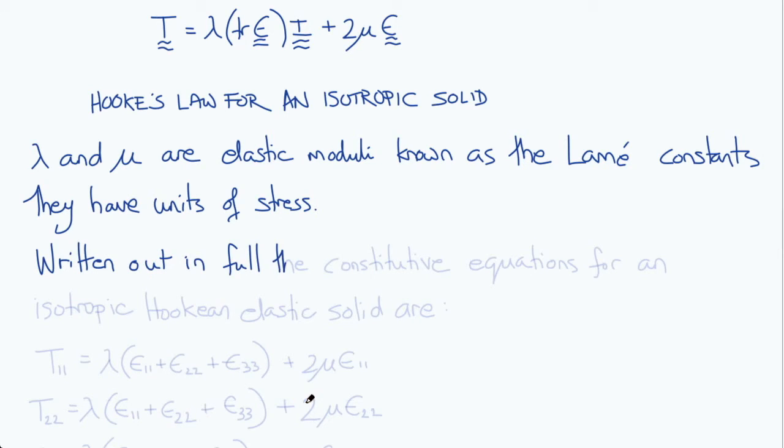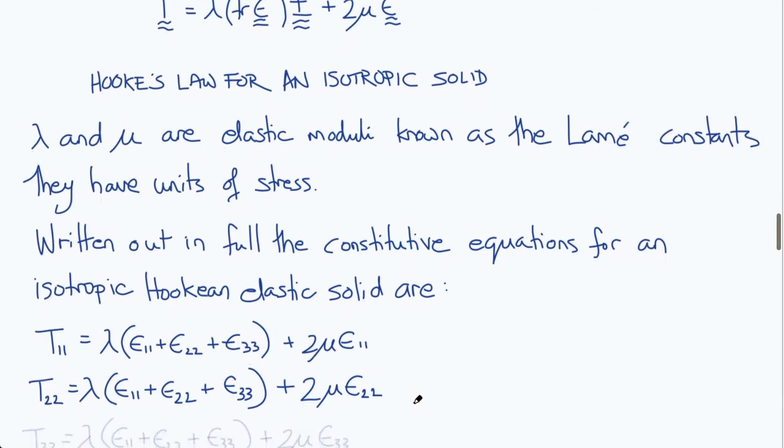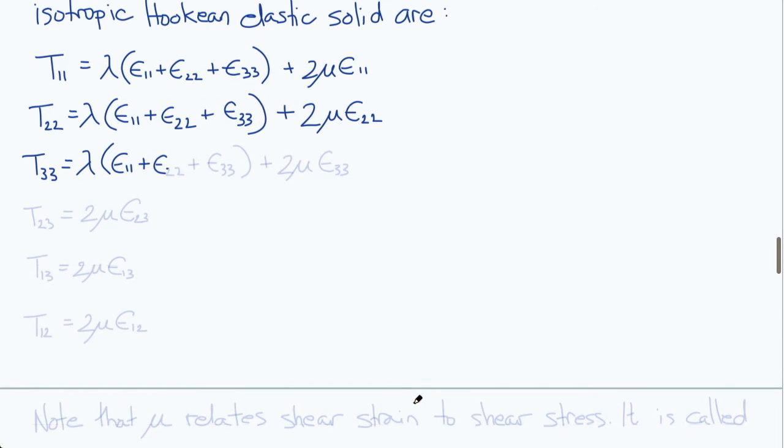Writing the constitutive law out now in full, for the isotropic Hookean elastic solid, we get the following. T11 is equal to lambda times ε11 plus ε22 plus ε33. So that's the trace of ε. T22 equals lambda times ε11 plus ε22 plus ε33 plus 2mu ε22. And T33 equals lambda times ε11 plus ε22 plus ε33 plus 2mu ε33.